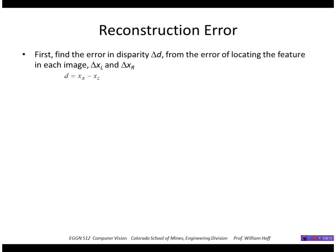First, let's find the error in disparity if we know the error in locating the feature in each image, call that delta xl and delta xr. We know that the disparity is just xr minus xl. If I take the total derivative of that equation, I get the derivative of disparity is equal to derivative of the xr position minus derivative of the xl position. So treating those as my errors, I get delta d equals delta xr minus delta xl.